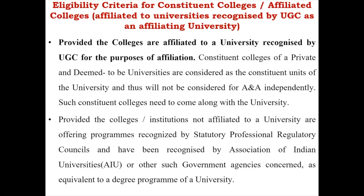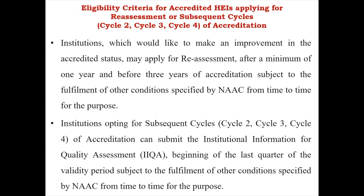Any institution that would like to improve its grade — for example, if you were accredited in 2019 but are not happy with the grade and believe you have made improvements — can apply for reassessment after one year from the date of declaration of their result and before three years from that date, keeping in mind they fulfill other applicable conditions.